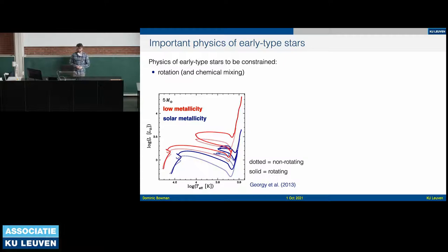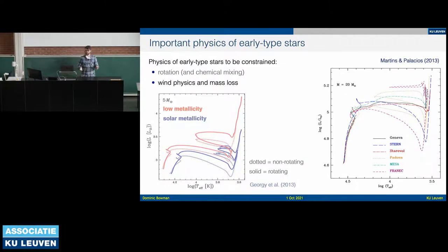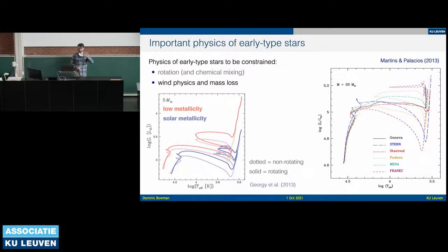Here's a figure from Cyril Georgie's paper using the Geneva stellar evolution tracks, showing differences in how a star evolves. This is a five solar mass star from the ZAMS to the terminal age main sequence and beyond — differences in metallicity and rotation as implemented in that code give very different evolutionary paths. If you compare different stellar evolution codes, the post-main sequence evolution of massive stars is quite uncertain. We want to provide detailed asteroseismic constraints as anchor points along that evolution to improve the codes.